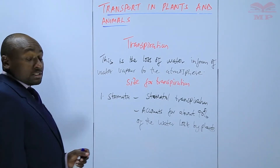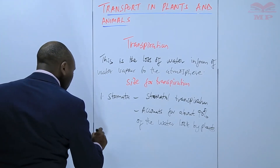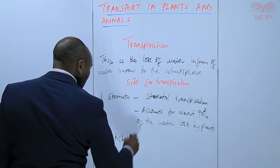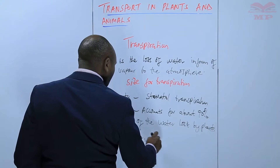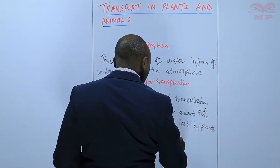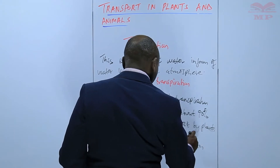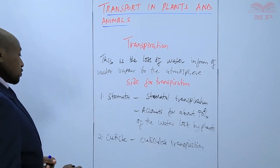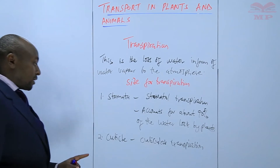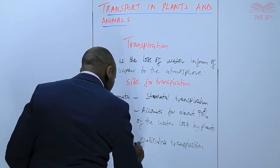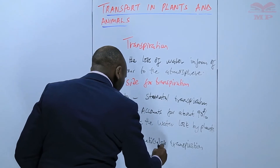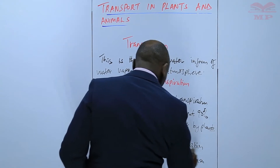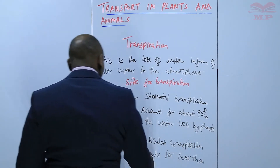Number two, we have the cuticle, and this we call cuticular transpiration. This cuticular transpiration occurs through the cuticle and accounts for less than 10% of the water that is lost.